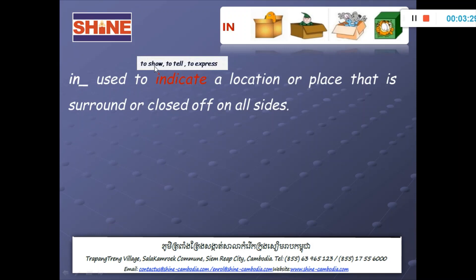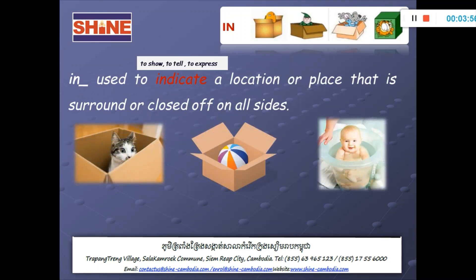In is used to show or tell a location or place that is surrounded or enclosed on all sides. Look at the picture here — you will get to know. Let's see some pictures to get more understanding. Look at the cat, the bone, the baby. The cat is in the box — surrounded, closed on all sides. It is in the box. You can say the bone is in the box, and you can say it is in the box too.